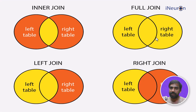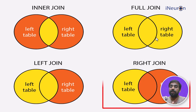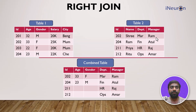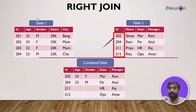Moving on to right join — it's similar to left join but mirrored. What left join does with the left table, right join does with the right table. It takes the entire data of the right table and then inputs the common data from both tables. Looking at the example, all the rows of table two are taken and input into the result.